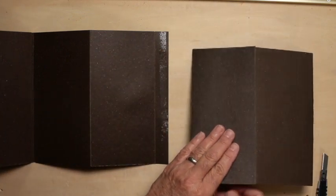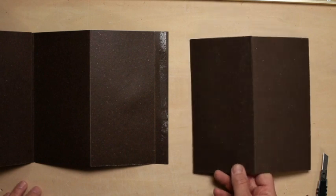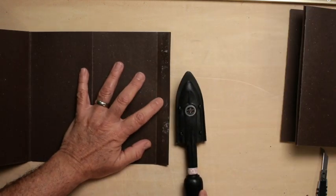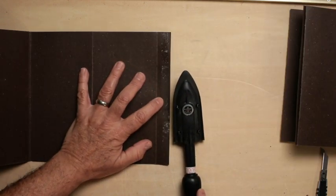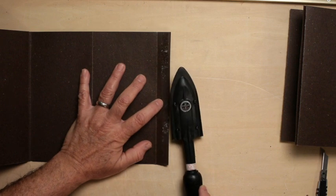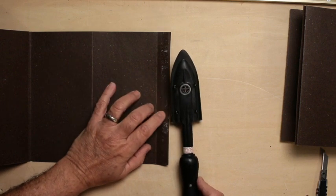So undoing Fusion 4000 dry mount film is very manageable using a tacking iron.